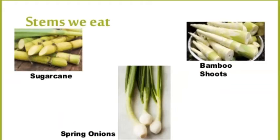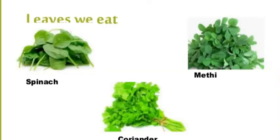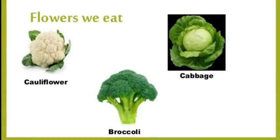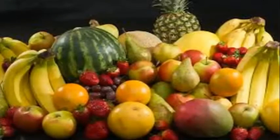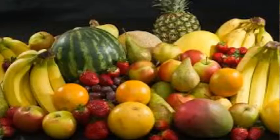In the case of sugarcane, we eat the stem of the plant. In the case of spinach and cabbage, we eat the leaf of the plant. In the case of cauliflower and broccoli, we eat the flower of the plant. In the case of apple and banana, we eat the fruit of the plant. Hence, in different plants, we eat different parts.